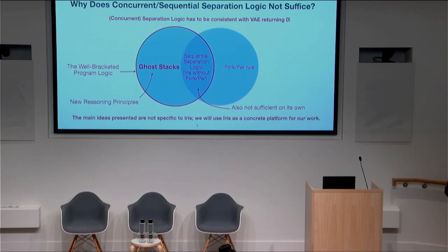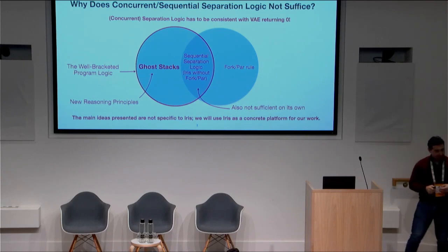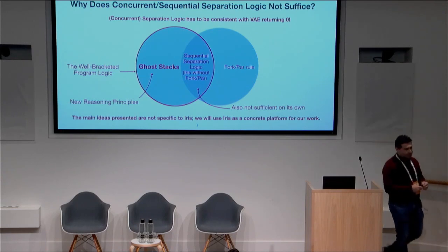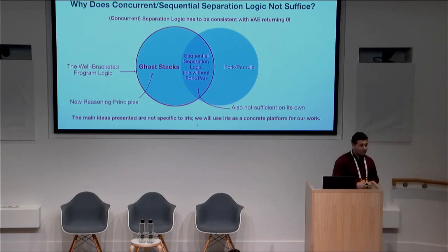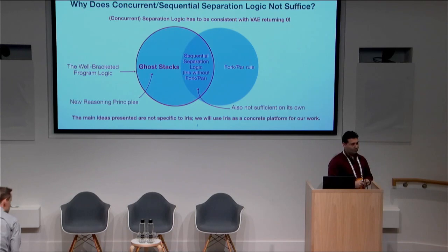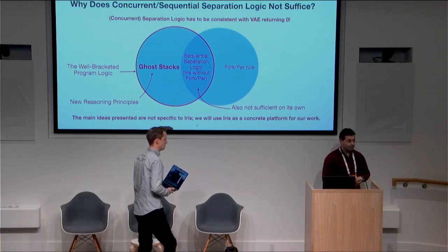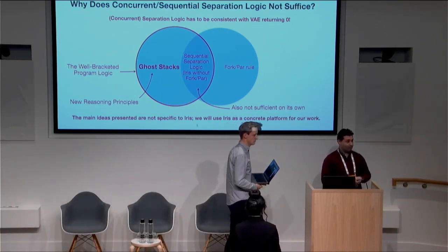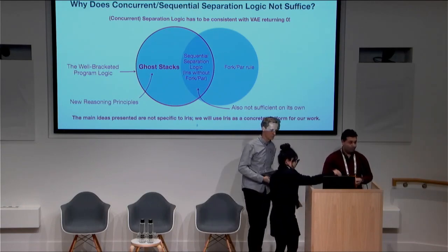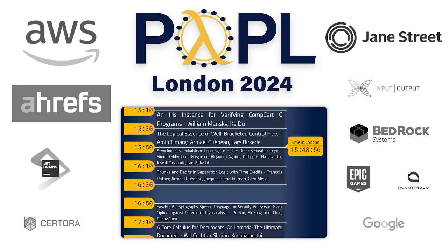Just to follow up: if you have a single-threaded scheduler and you're running code under that scheduler in parallel with other threads, you would still be able to use this kind of reasoning to verify correctness of an example like that running under the single-threaded scheduler. That's a typical Iris thing to do. Yes, absolutely. Let's thank Amin again.